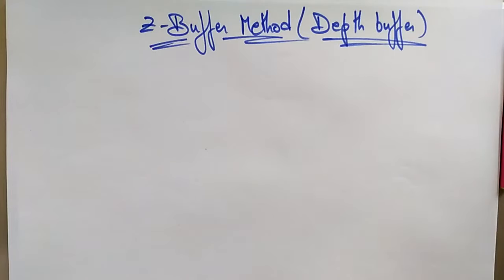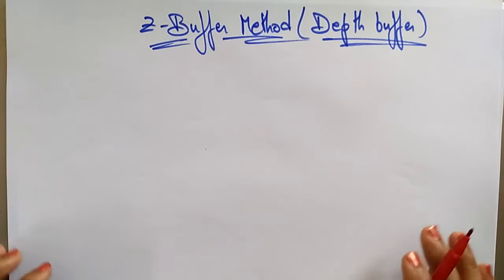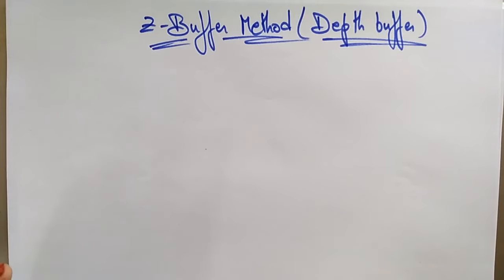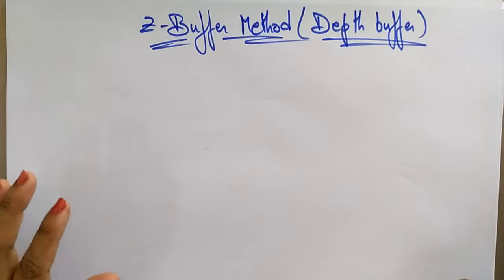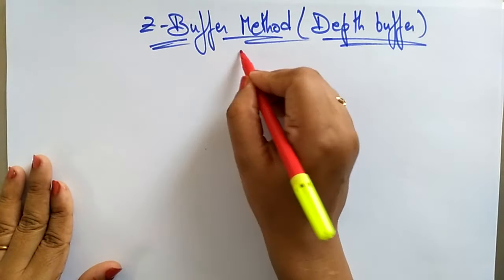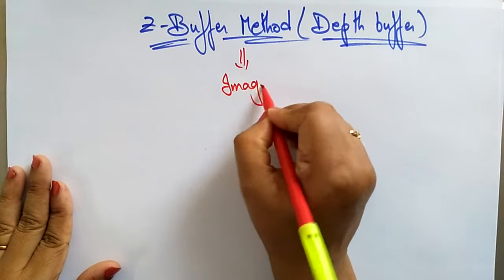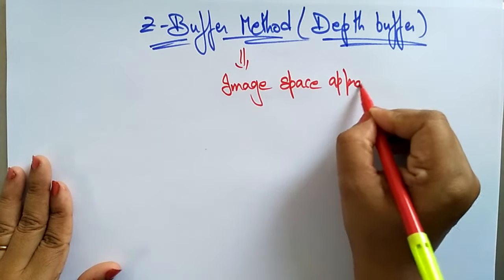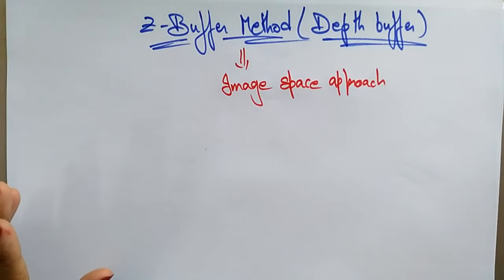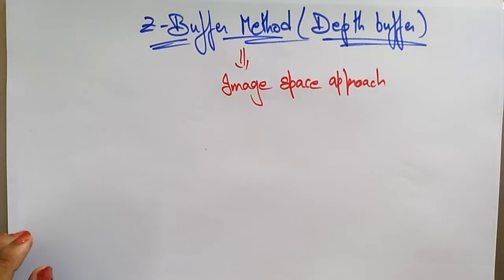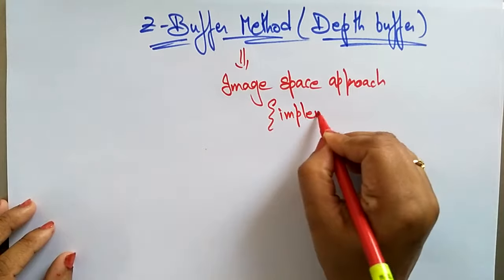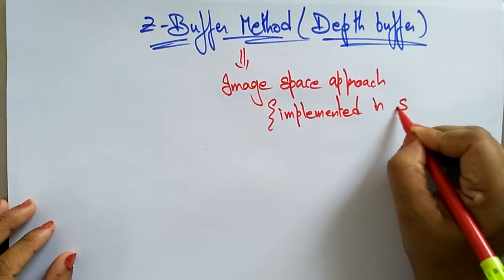Welcome back. Let's continue with VSD, that is visible surface detection. In the previous video I explained one method, the back-face detection, which is an object space method. Now let's take one more example in visible surface detection: the Z-buffer method. This Z-buffer method is an image space approach, implemented in the screen coordinate system. If it is an object space method, it is implemented in the physical coordinate system.